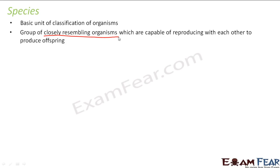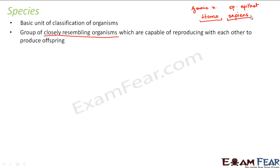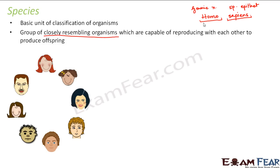Now, remember when we talked about binomial nomenclature — we said it consists of two parts. The first part is the generic name and the second part is the specific epithet. For example, 'Homo sapiens' is the binomial name for human beings. 'Homo' represents the genus and 'sapiens' represents the species. So all human beings, irrespective of how they look, share a lot of similarities.